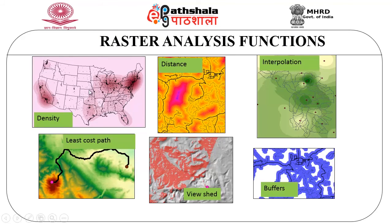These are some raster analysis functions: the density function, which can be analyzed using these kinds of maps; the distance function; the interpolation function, which gives a particular display; the least cost path method; the viewshed method; and buffers. These are various examples of raster analysis functions.